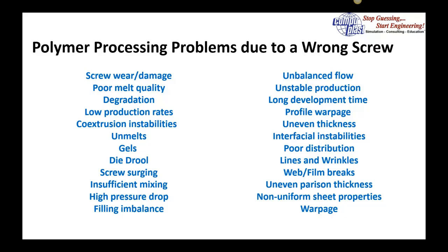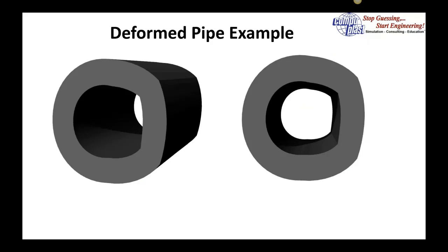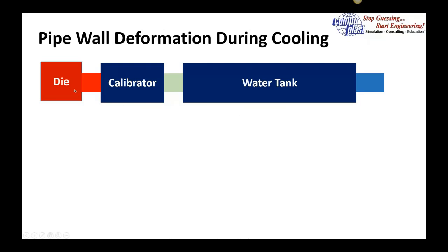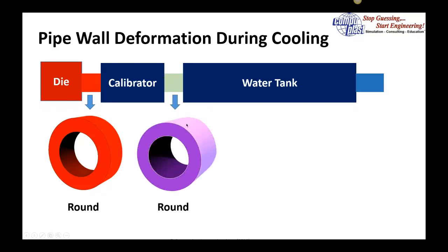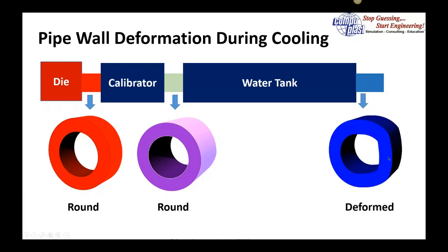The first example I want to go through in detail is this example of a deformed pipe. The client contacted us saying he couldn't make round pipe and had this flat spot. The client believed this was caused by poor die design. We visited the facility. They have a typical setup: a die, the polymer coming out into a calibrator section, then into a water tank for cooling. The material coming out of the die looked quite round. At the end of the calibrator, it seemed quite round, but at the end of the water tank, the pipe had deformed and produced a flat side.